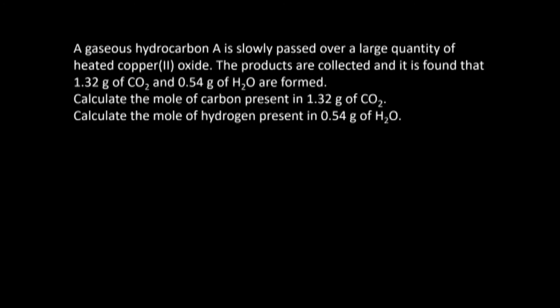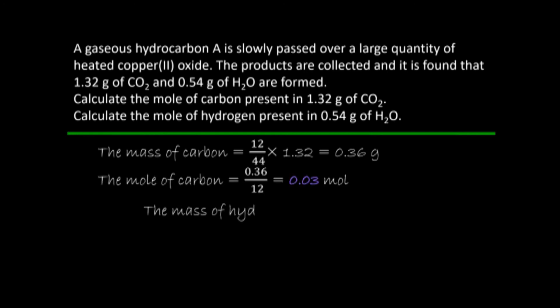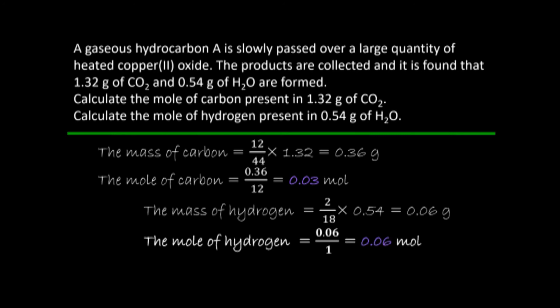Another problem: a hydrocarbon is completely burned by passing through heated copper oxide, producing copper, carbon dioxide, and water. Given the masses of water and CO₂, find the moles of carbon and hydrogen. Mass of carbon: from 1.32 g CO₂ using the ratio (12/44), giving 0.03 mol carbon. Mass of hydrogen similarly gives 0.06 mol hydrogen. The carbon-to-hydrogen ratio is 1:2, indicating the hydrocarbon is an alkene.